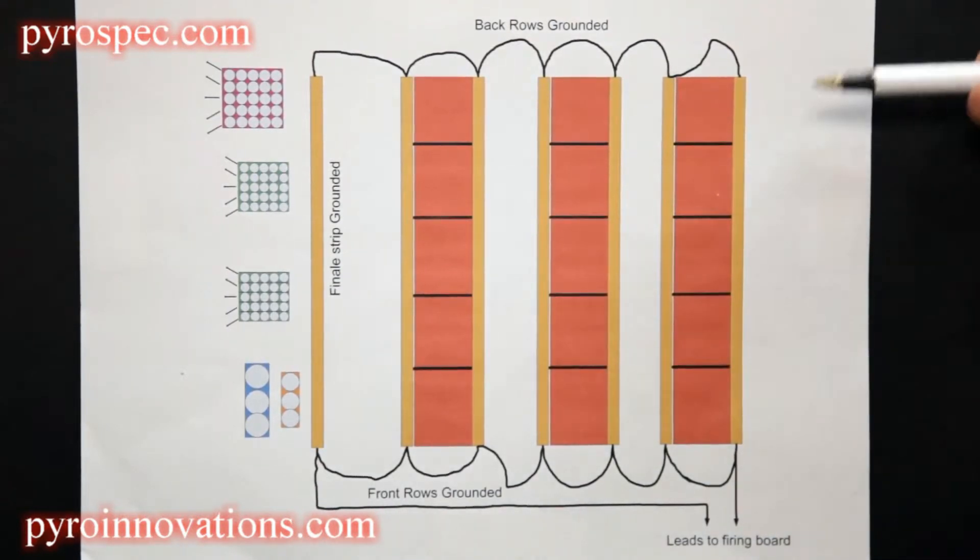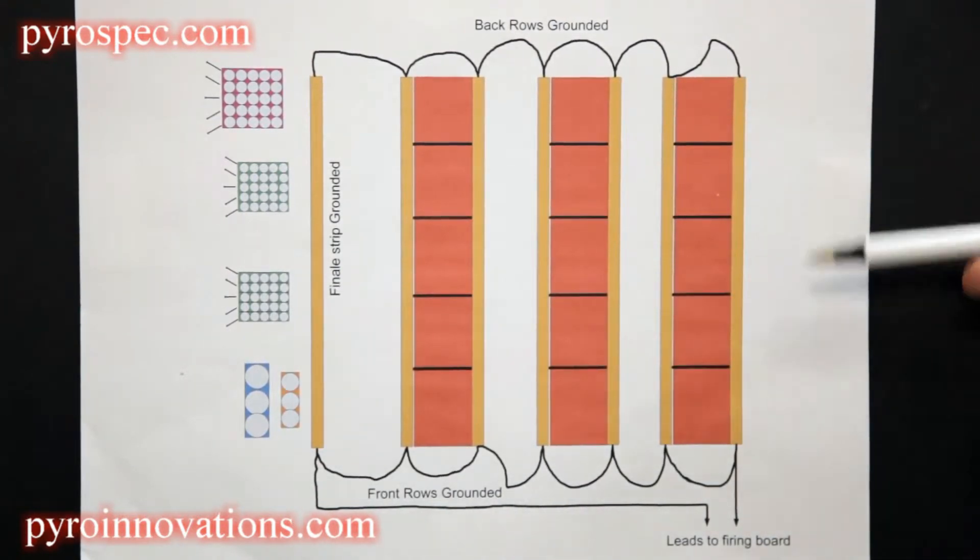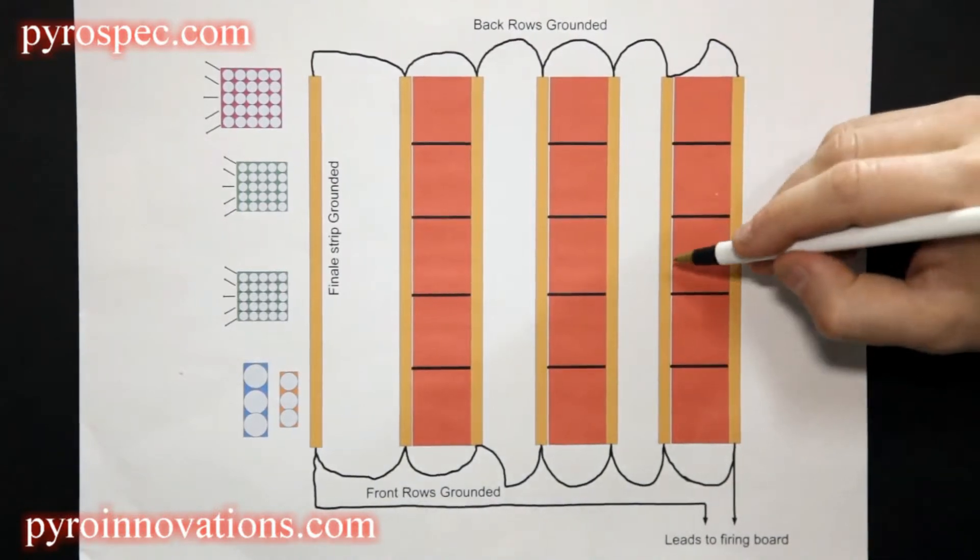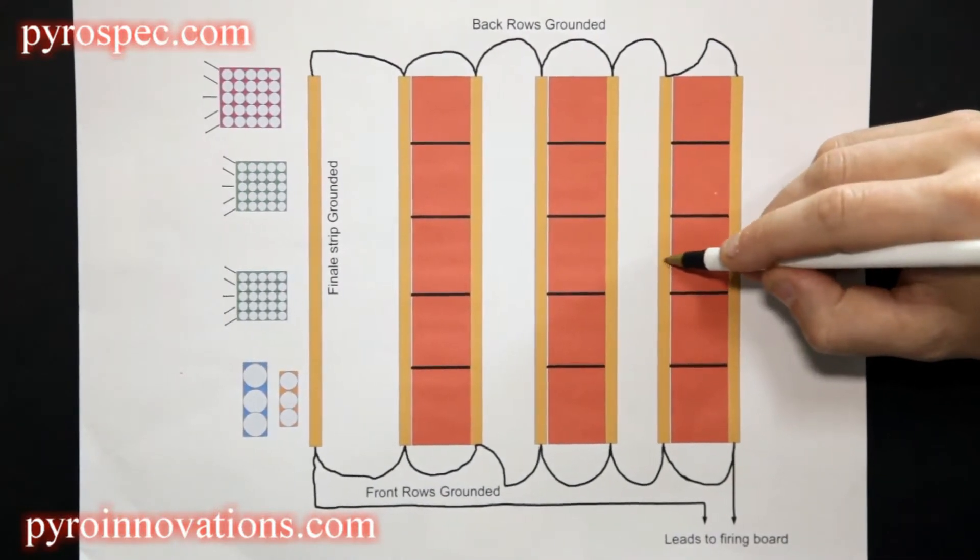In addition to that, we also want to redundantly ground these further in case there is a break internal to the strip.